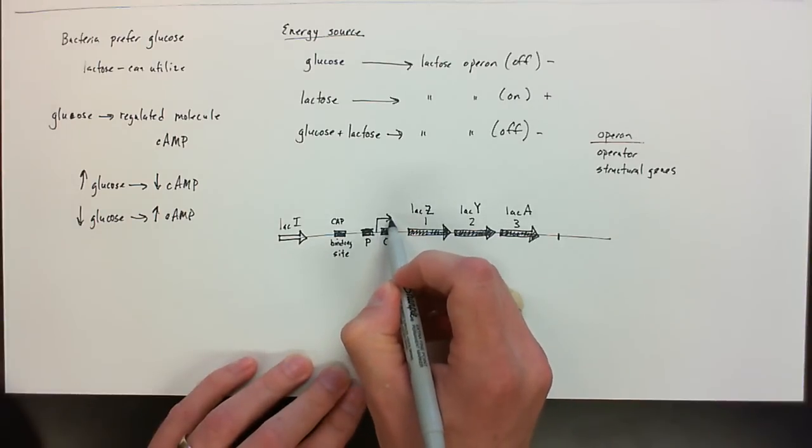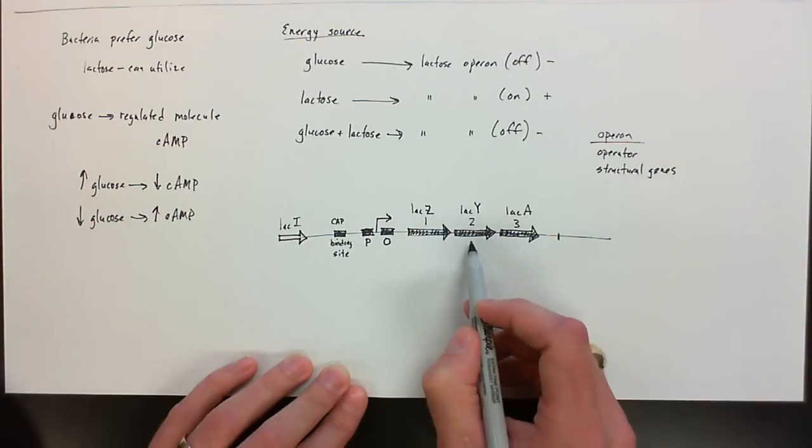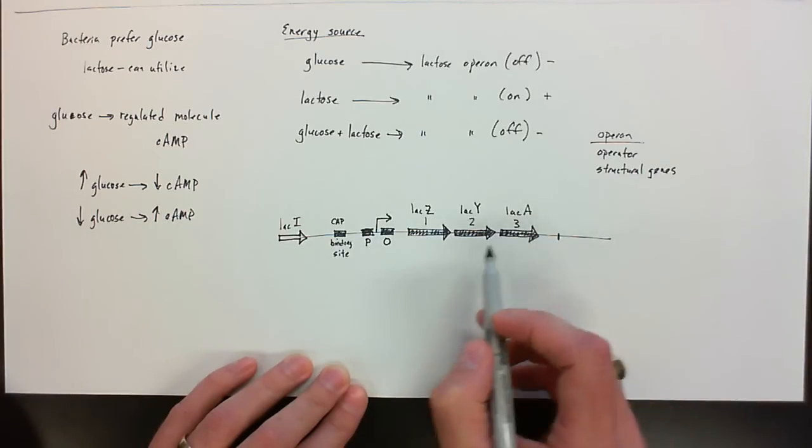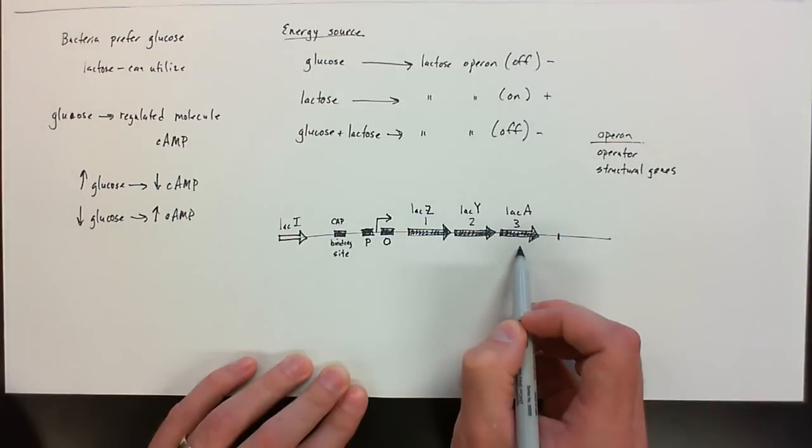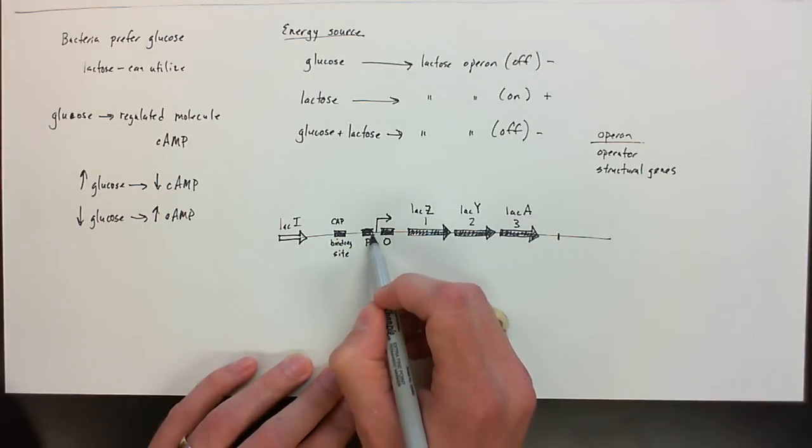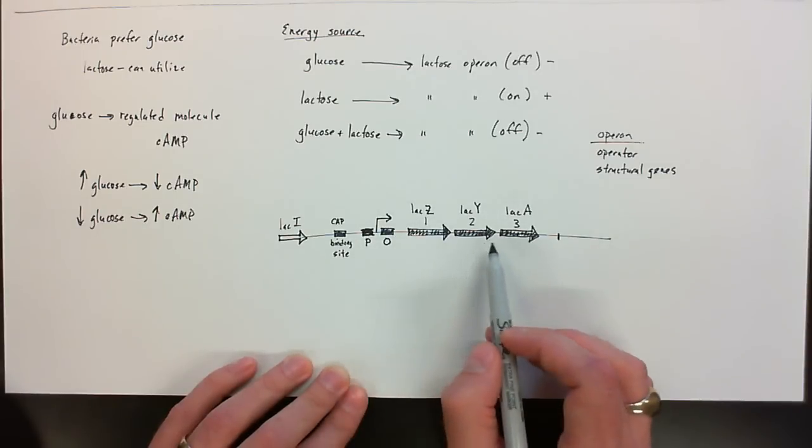What I'm showing here with this particular area is the transcriptional start site. These areas here, the lac Z, the lac Y, and the lac A, these are the genes, or the structural genes in this operon. The P is the promoter, so this is where RNA polymerase will bind. And O is the operator, so we're going to see that this segment of DNA is going to be involved in whether this whole thing gets turned on or off.